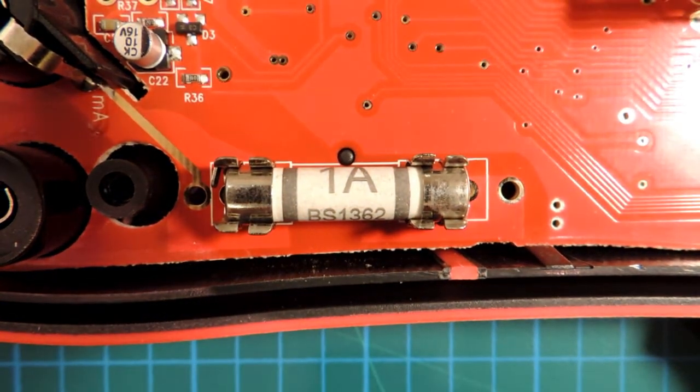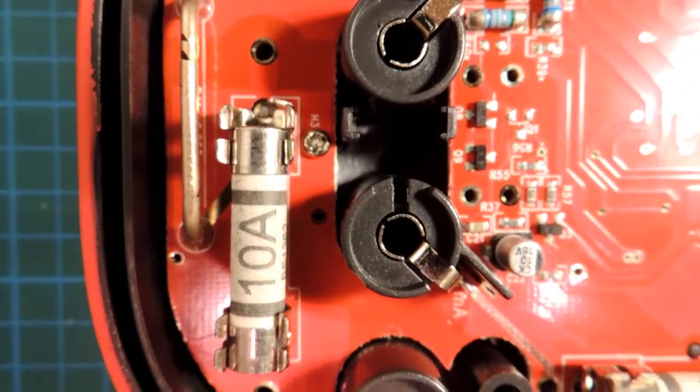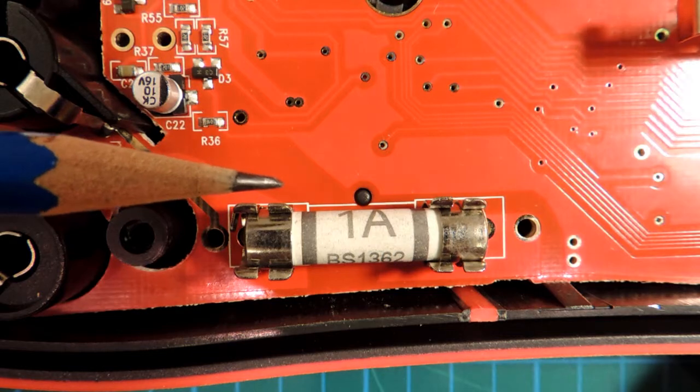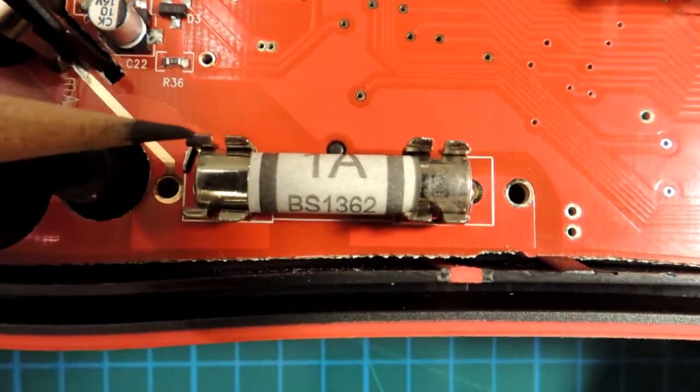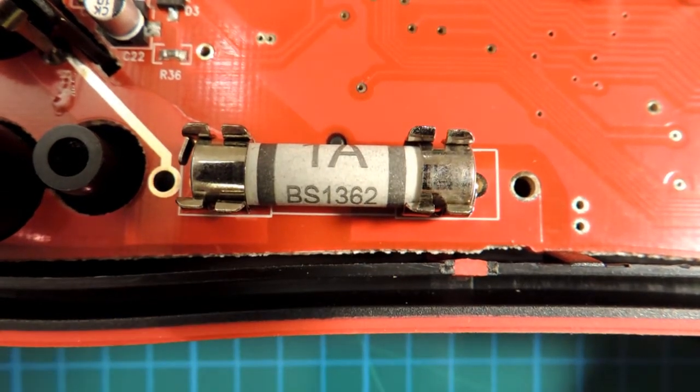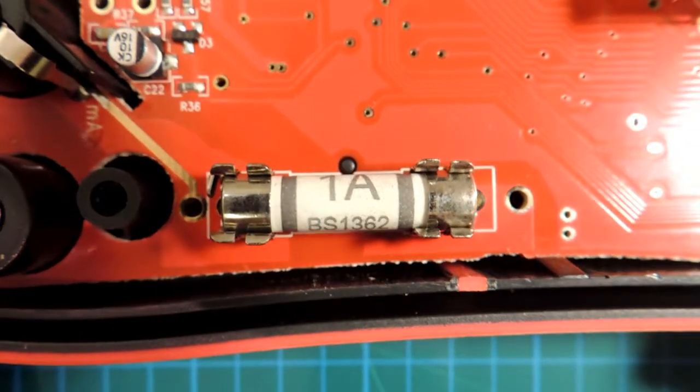Okay, so this is one of two fuses that's on the unit. Obviously one's for the 10 ampere range and one's for the milliamp and microamp range. Now there's ceramic fuses, and there's a notation BS 1362.